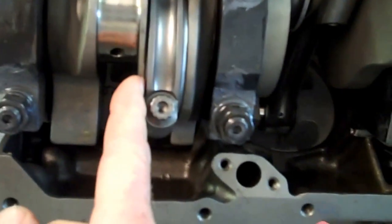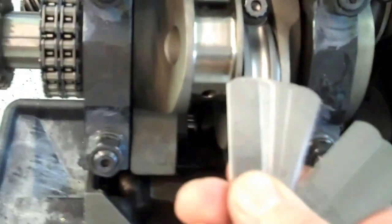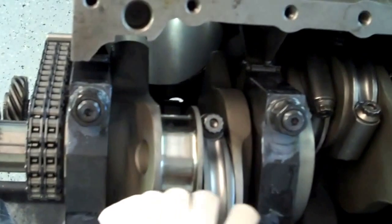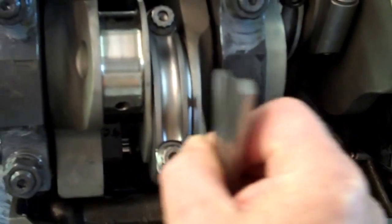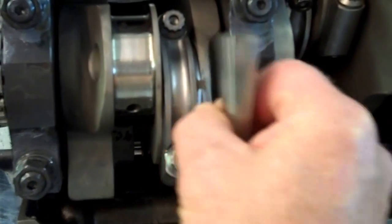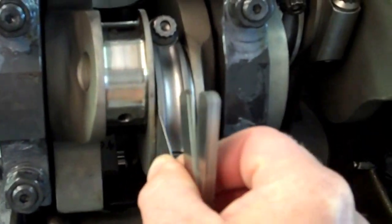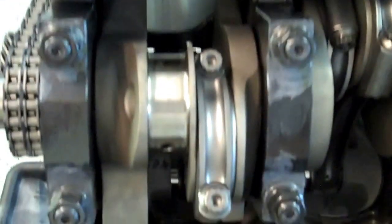To measure this, what you're going to do is take a feeler gauge and put it, I'm going to grab an 11, between the connecting rod and the cheek of the crankshaft. And that will be the side clearance.